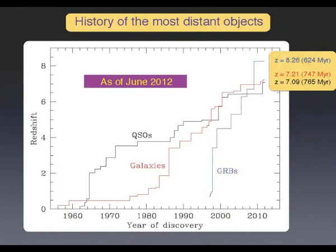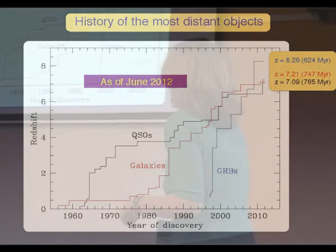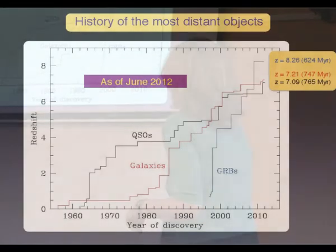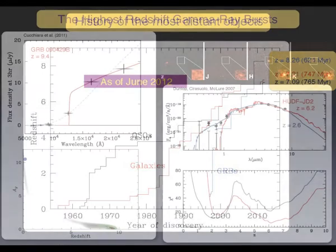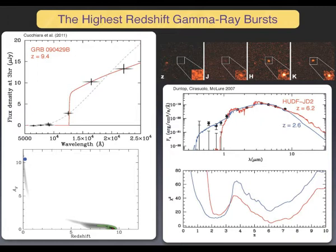I just wanted to show this that was shown yesterday. These are spectroscopically confirmed objects — the record for quasars, galaxies, and GRBs. GRBs are way above galaxies and quasars in spectroscopic redshift records. The advantage of using GRBs to detect high-redshift objects is that they disappear, and when they disappear, you know it's an explosive event.